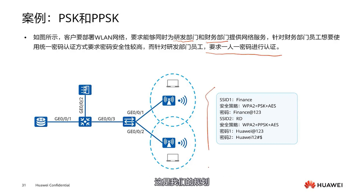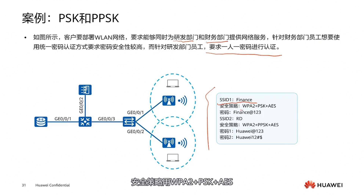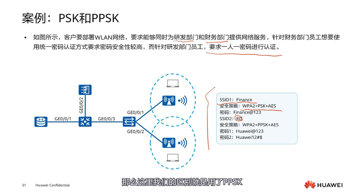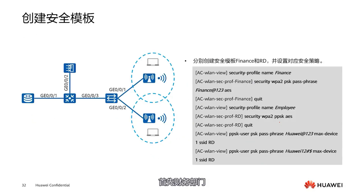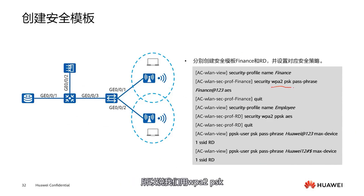Let's take a look at this planning. The first SSID is finance. For the finance security policy, we use WPA2 plus PSK plus AES. The password is finance@123. The second SSID is R&D, the research department, and the difference is using PPSK. Different people use different passwords. Suppose there are two employees — one with password one, another with password two. For the finance department, since not everyone uses a separate password, we use WPA2-PSK.